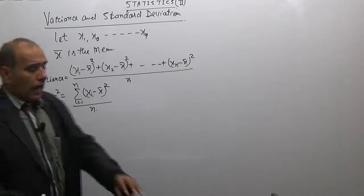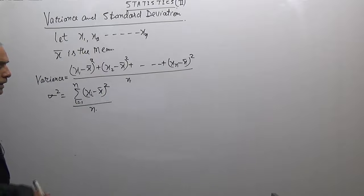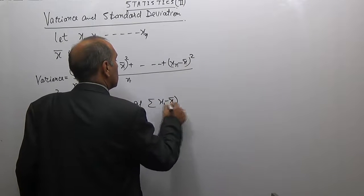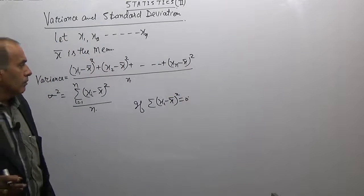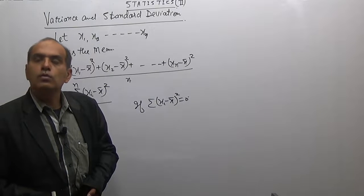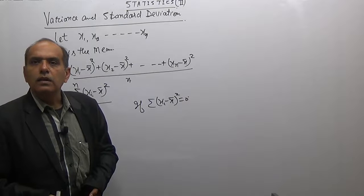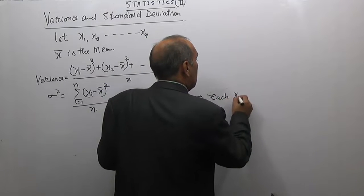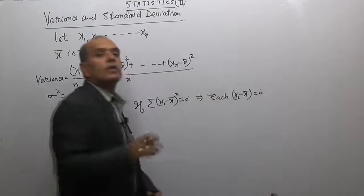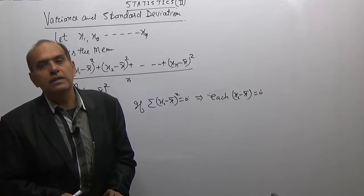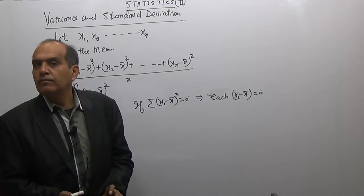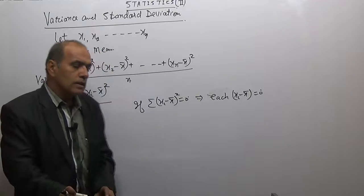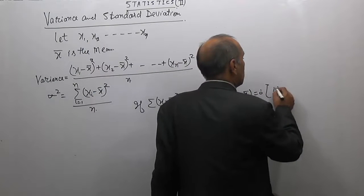अब अगर Σ(xᵢ - x̄)² का result 0 आता है - आप कहेंगे ऐसा कैसे हो सकता है? क्योंकि square करके add करोगे तो minus होने का चांस नहीं है। यह तभी possible है जब each xᵢ - x̄ = 0, यानि हर एक value में से mean minus करने पर deviation 0 आए। इस condition में हम कहते हैं: no deviation या no dispersion.